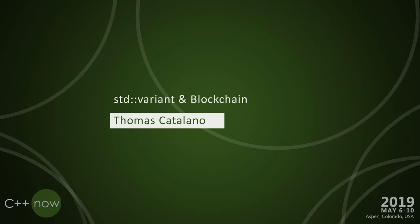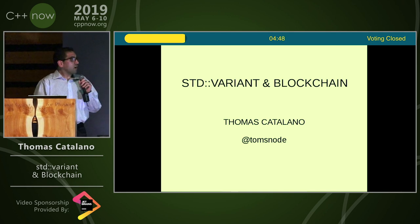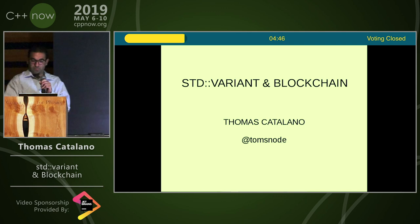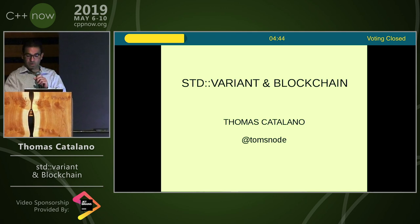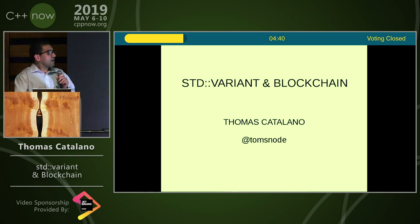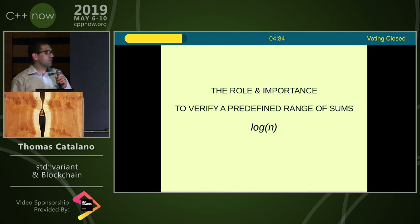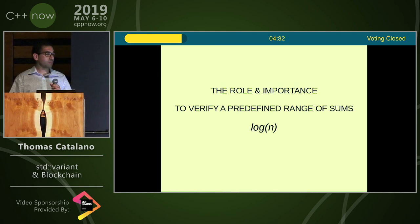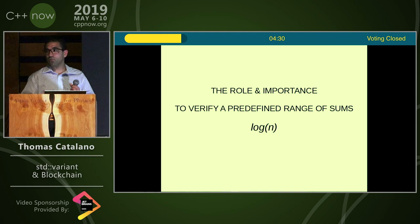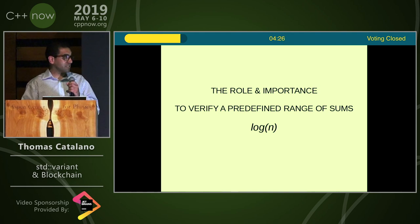This covers the C++17 standard library variant and how it's going to help blockchain interfaces. The role and importance is a login for blockchain — it's a verification process that we go through, and it's all based on consensus.